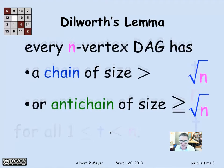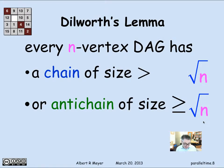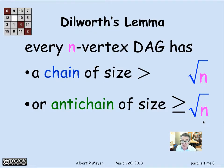A simple application: choose t to balance anti-chain size against chain size by setting t equal to the square root of n. Then both bounds become square root of n. We can conclude that every n-vertex DAG has either a chain of size at least √n or an anti-chain of size at least √n — possibly both, but at least one of the two must hold.